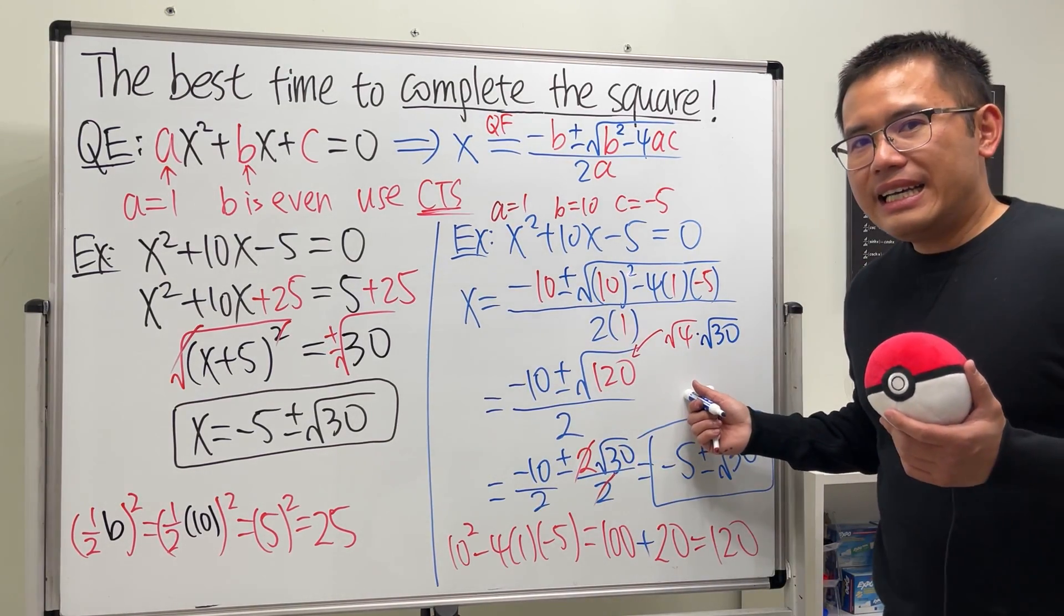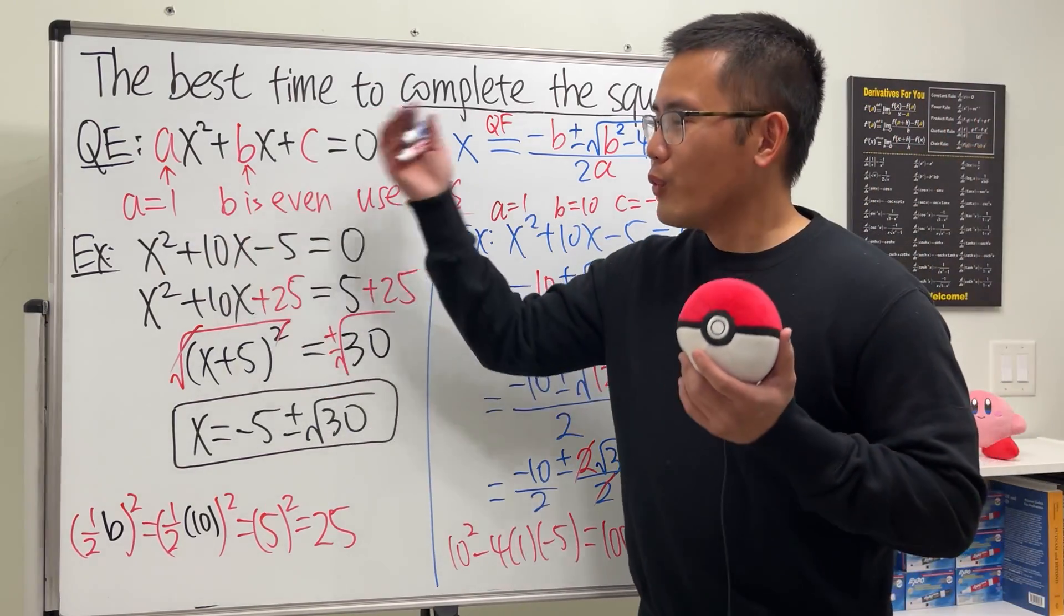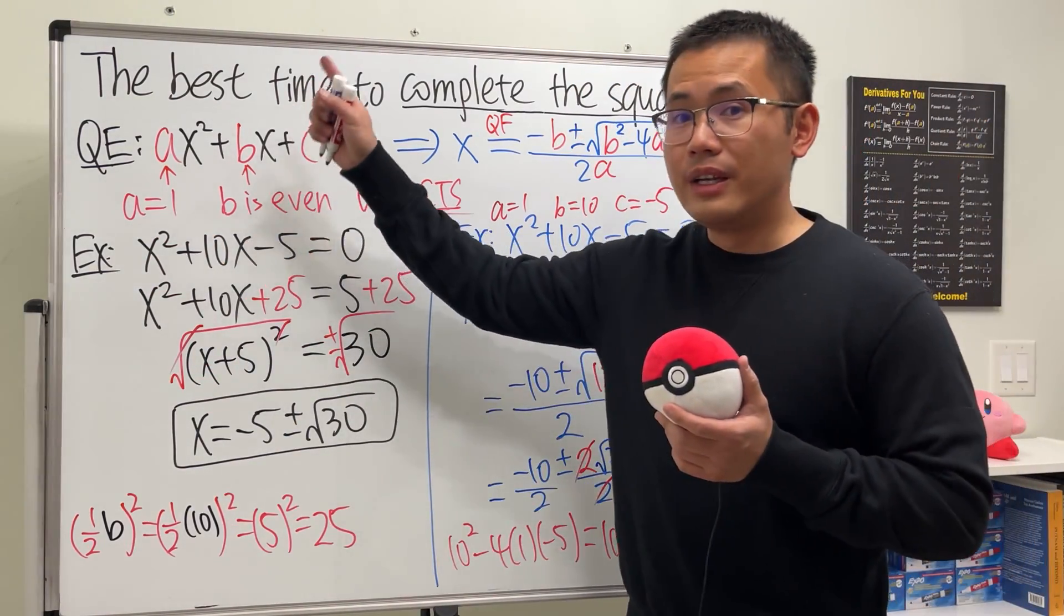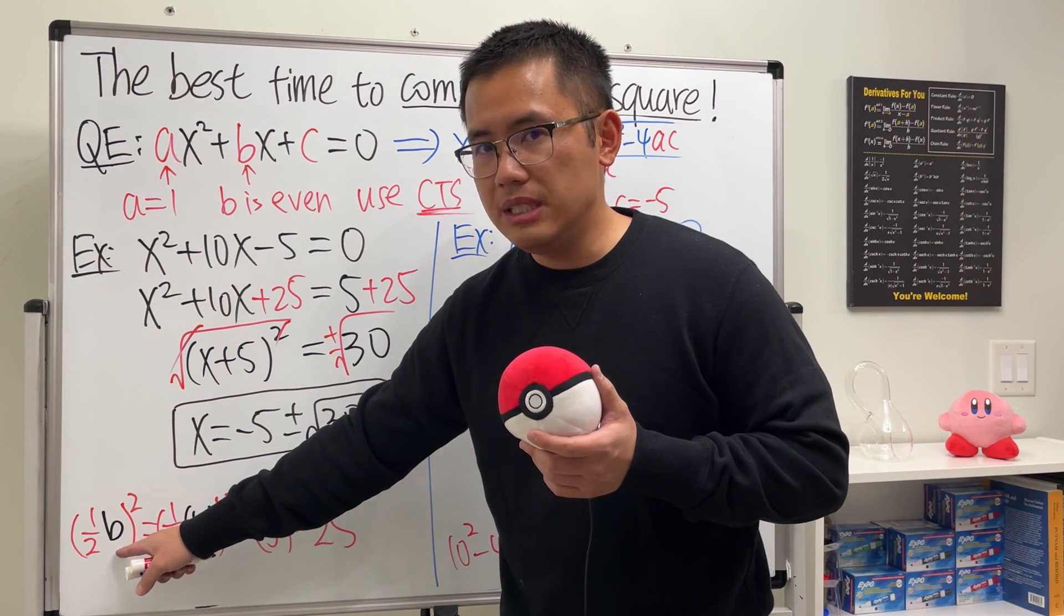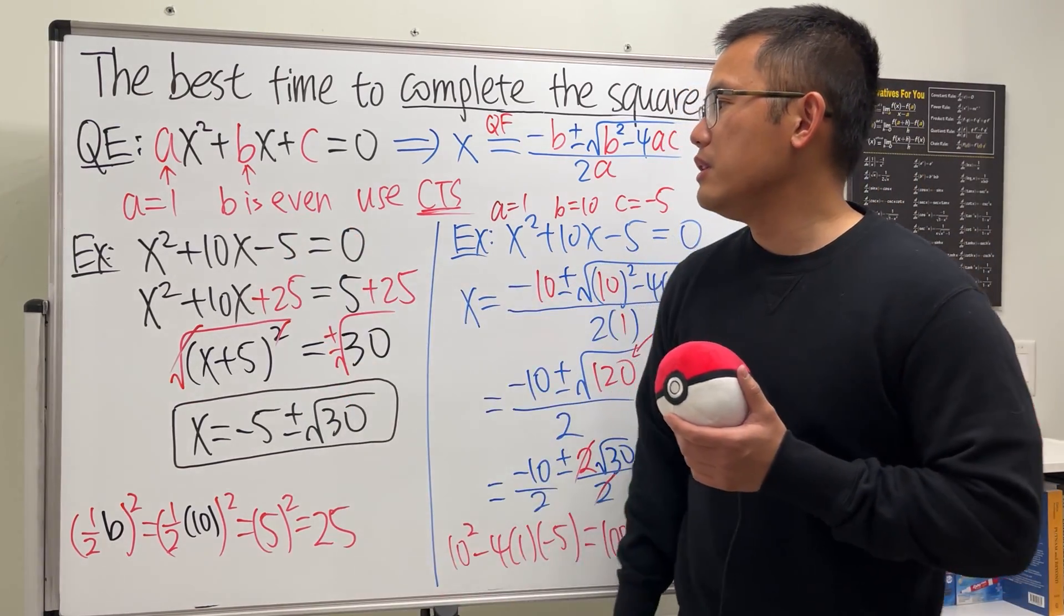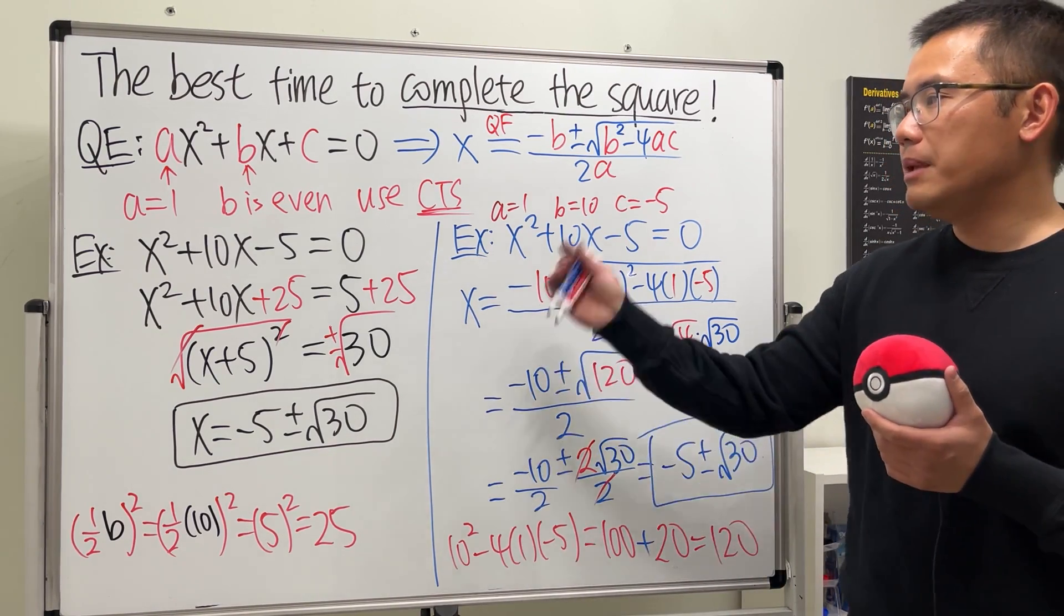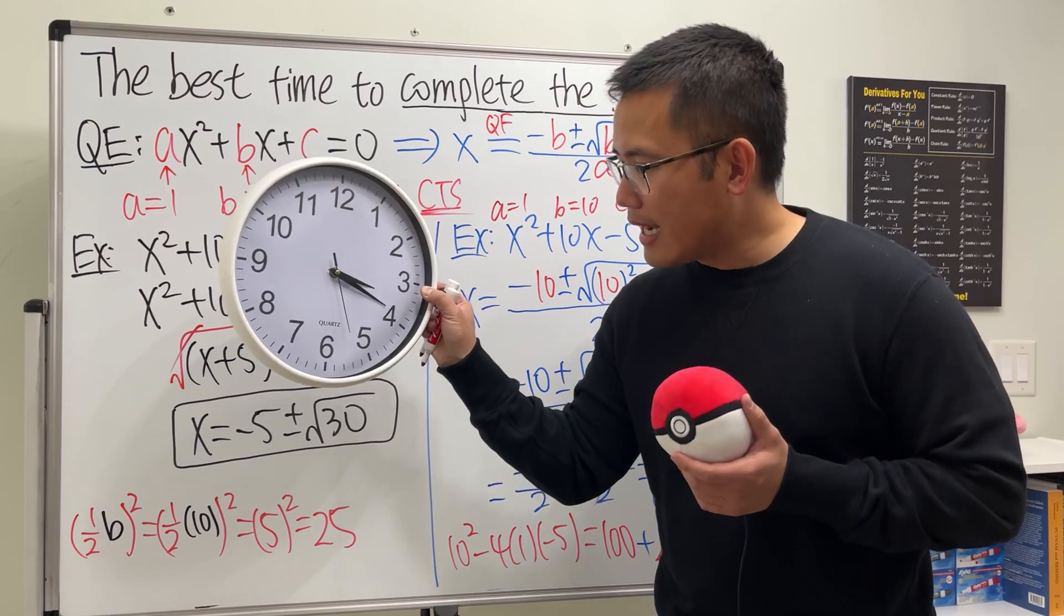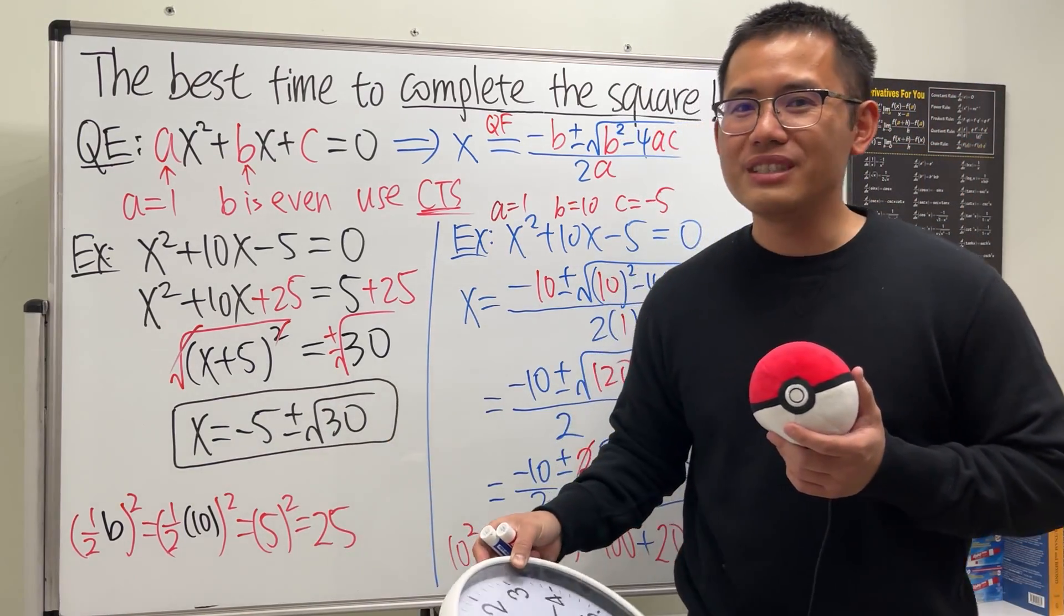But I will say this did take us a little bit longer, didn't it? So what do you guys think? When's the best time to complete a square? When a is 1 and b is even. Why b is even? The reason for that is because you see the magic number formula, 1/2 times b. If b is even, then you can keep the inside a whole number so you don't have to deal with fractions. So that's why we want b to be even. C doesn't matter, and it also works if you have imaginary solutions. Alright, so let's check what time is it. Hey, it's still 3:20. Why is that? Because as I told you, this is the best time to complete the square. Check out my other videos if you need more help.